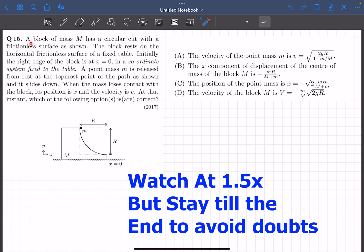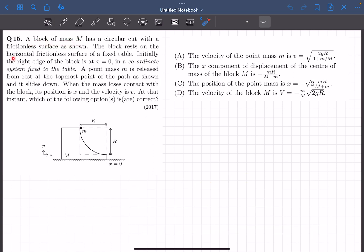Let's read the problem statement. We have a block of mass M that has a circular cut with a frictionless surface as shown in the figure. The block rests on the horizontal frictionless surface of a fixed table.